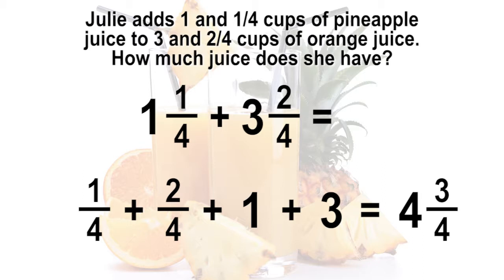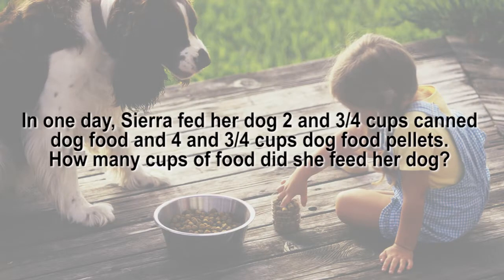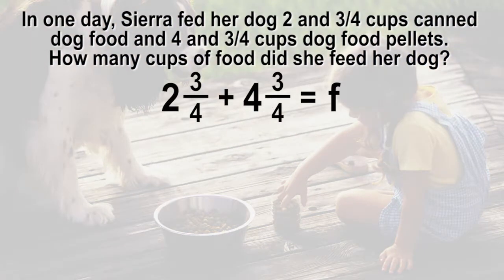What happens when the fractional parts sum is greater than one? In one day, Sierra fed her dog two and three-fourths cups of canned dog food and four and three-fourths cups of dog food pellets. How many cups of food did she feed her dog? The equation is two and three-fourths plus four and three-fourths equals F.